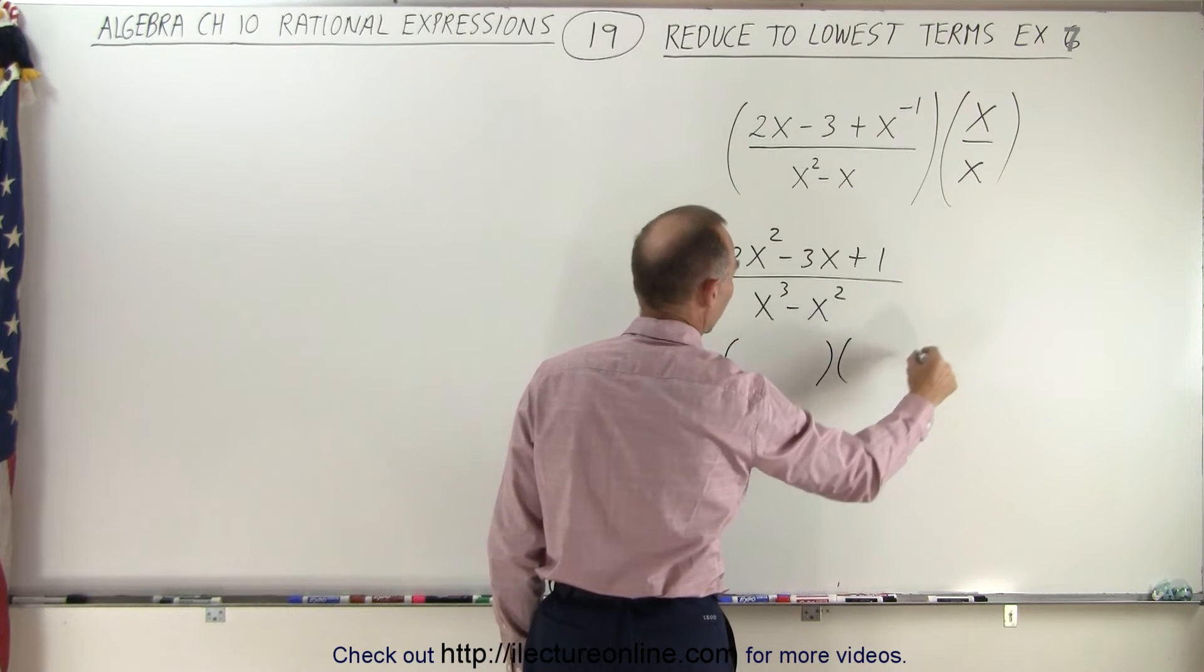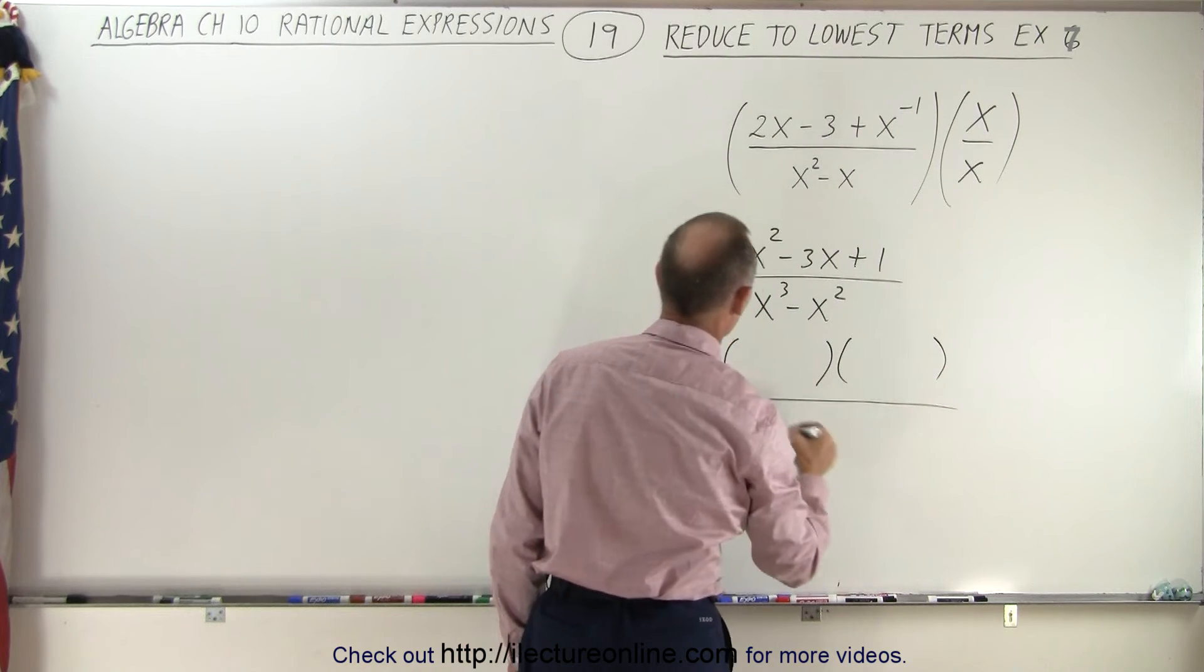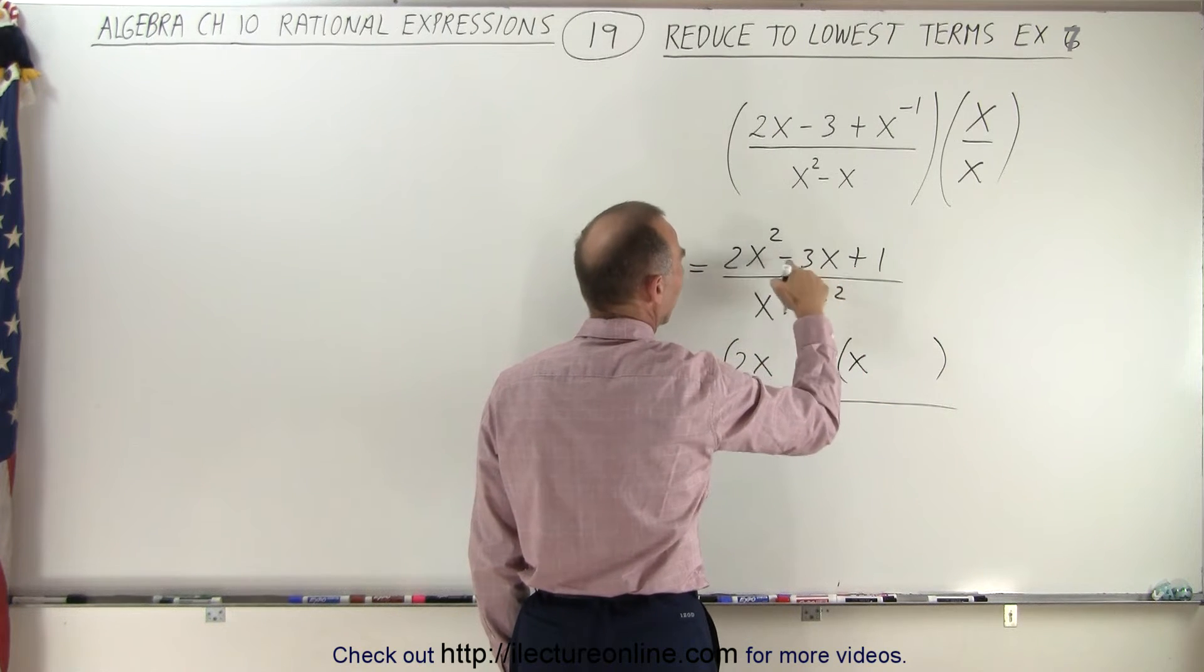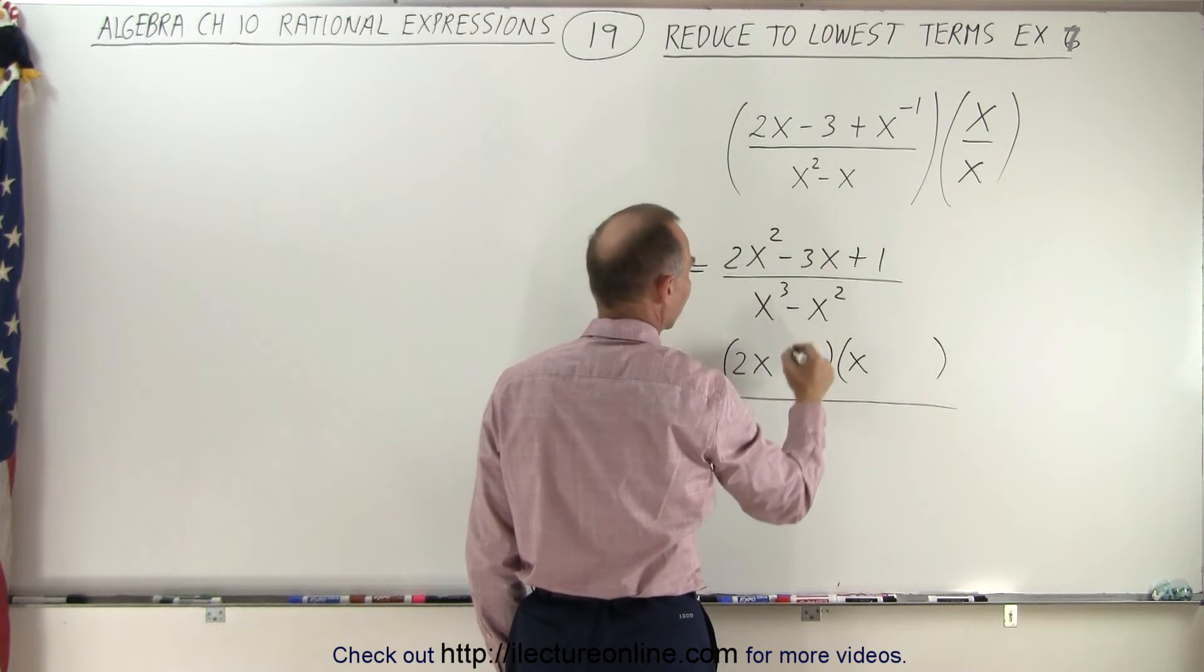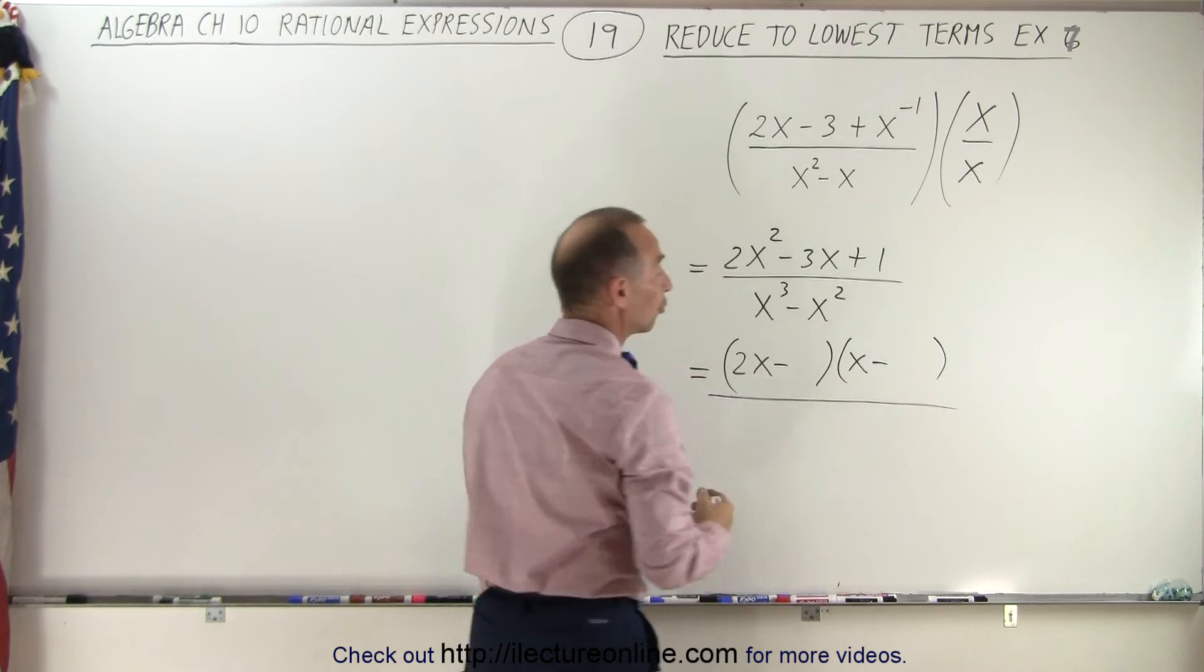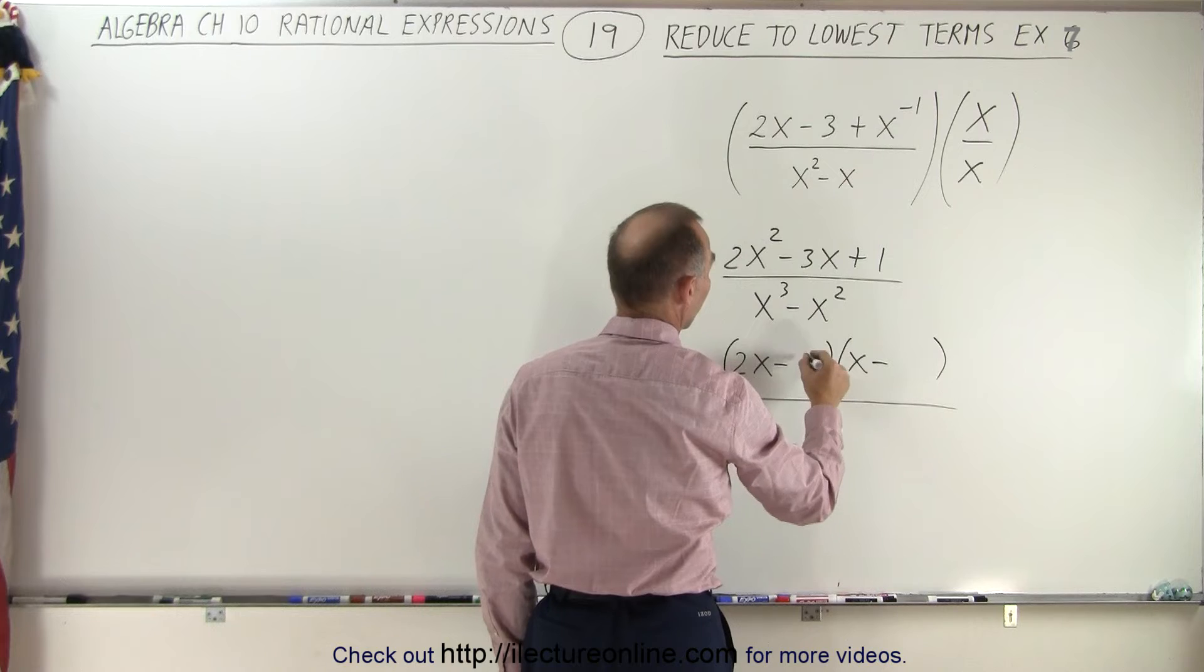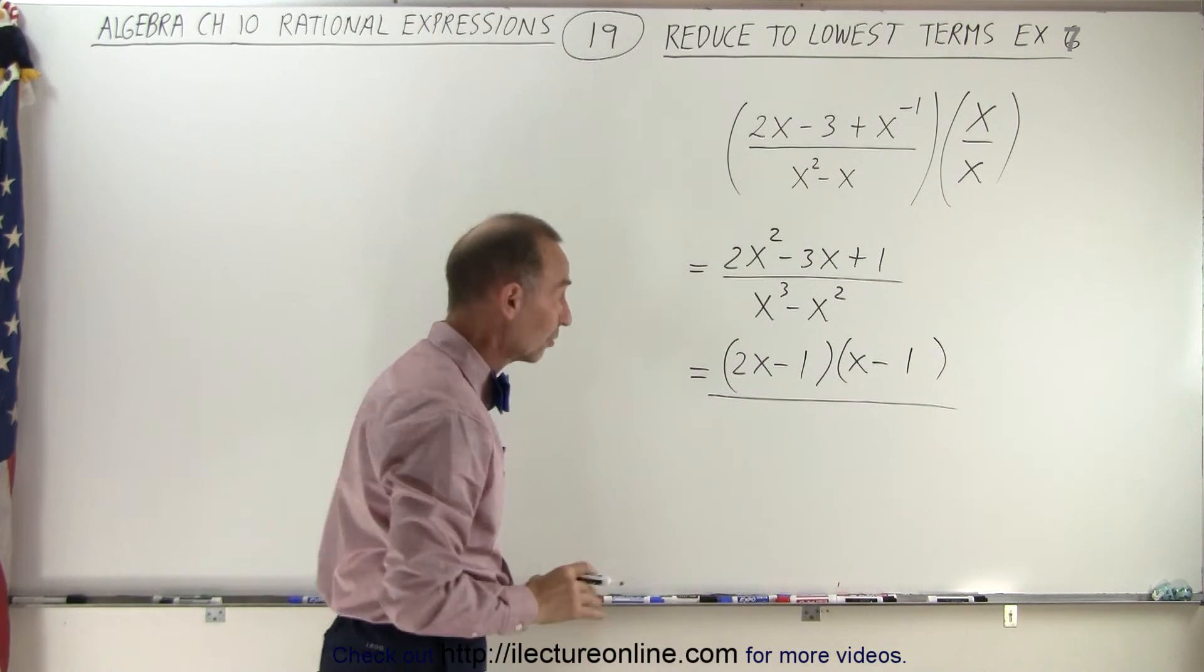So the numerator can be written as a product of two binomials. We have 2x and x, and we have a negative sign here and a positive sign there. That means we need two negatives, and there's only one option here to get a positive 1. We need to multiply negative 1 times a negative 1, so that's an easy factor.